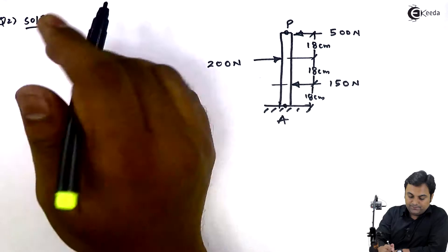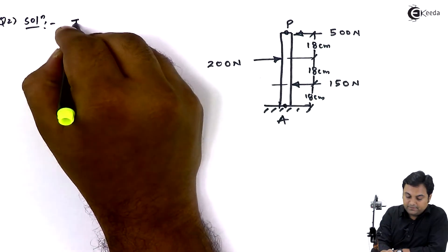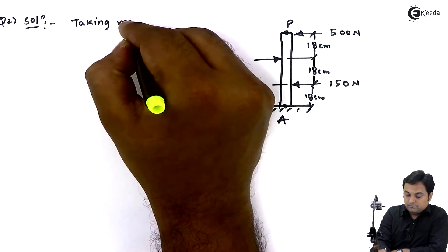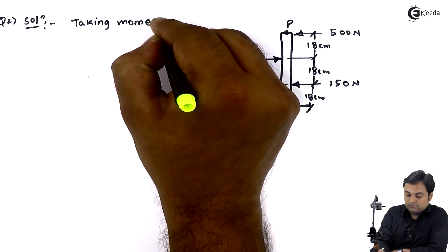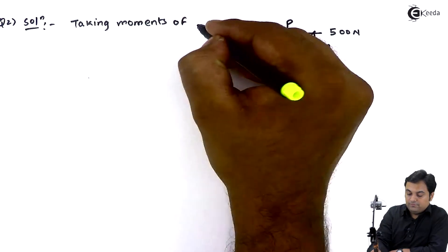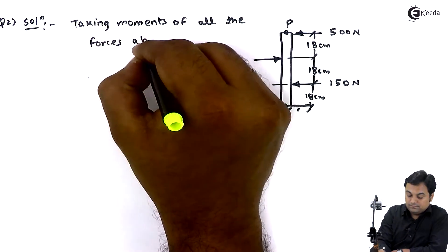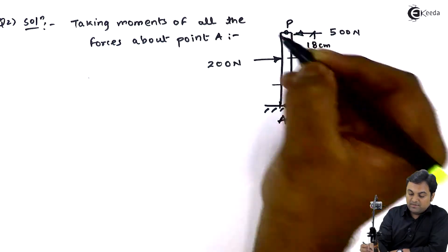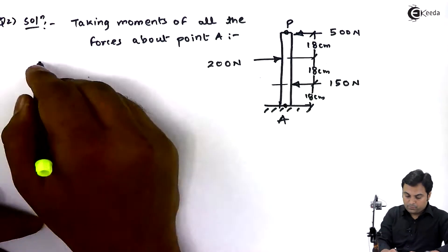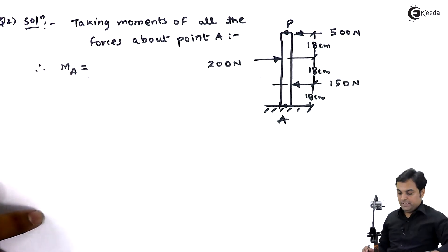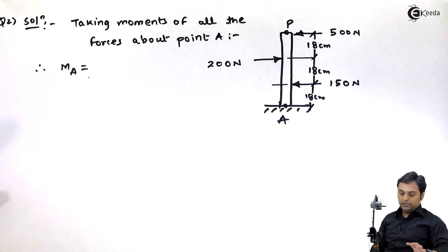So I will say that taking moments of all the forces about point A. Therefore moment of all forces about point A is equal to, here I would be considering...